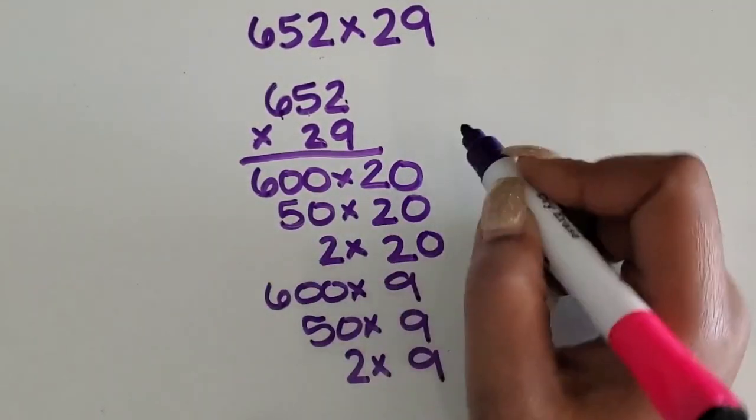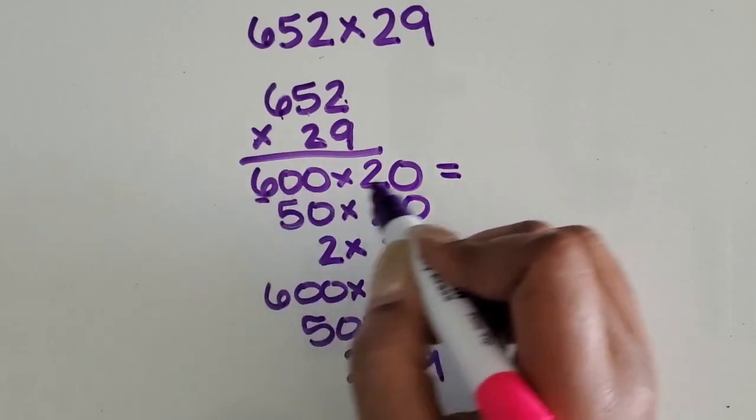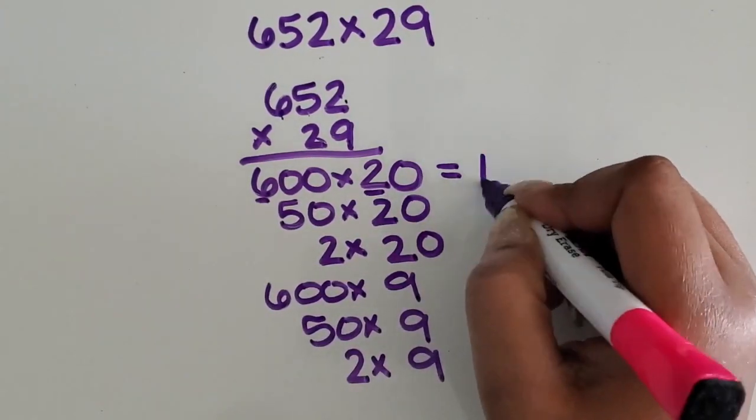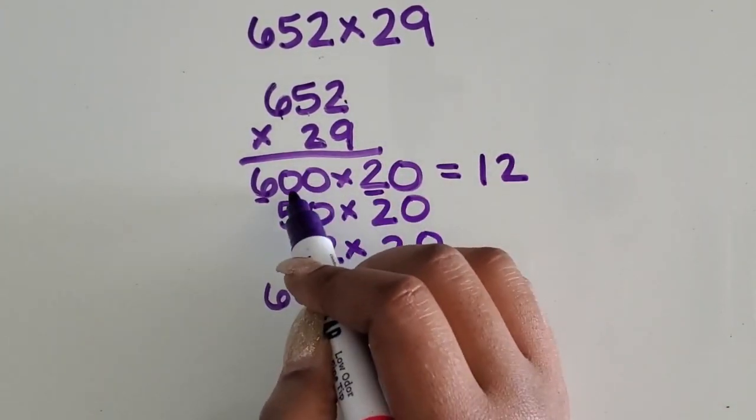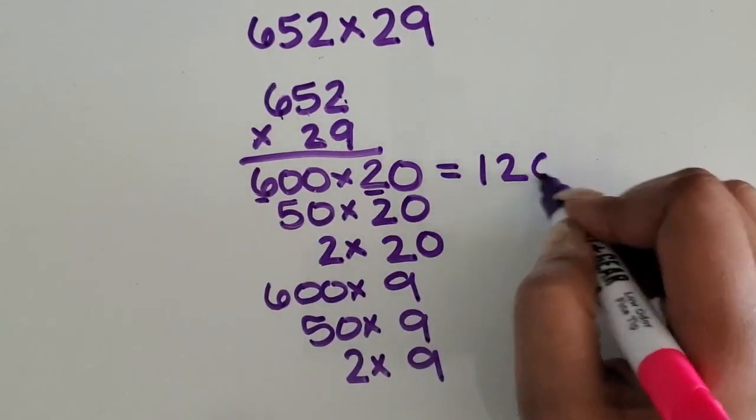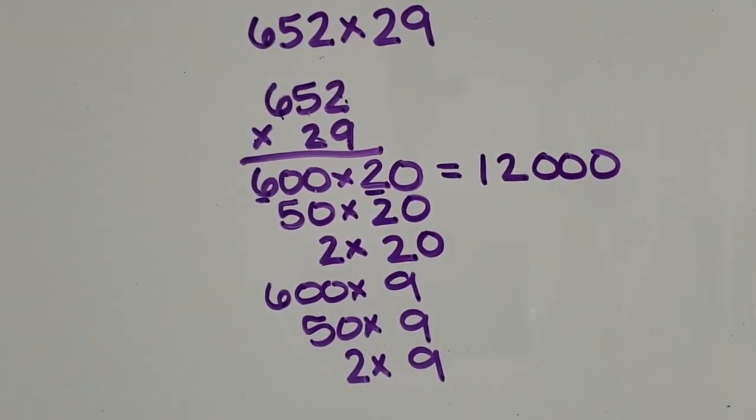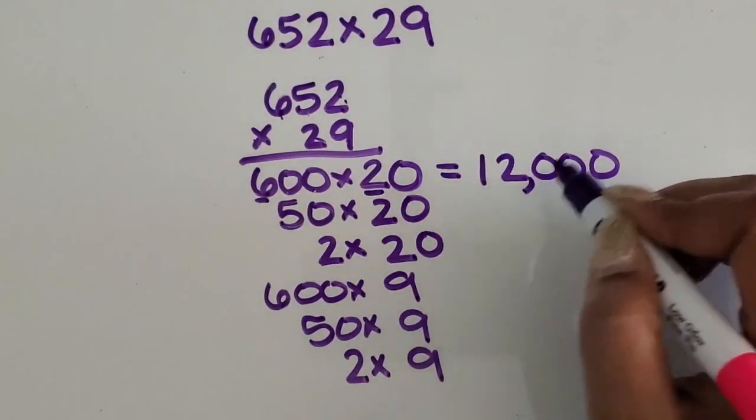So 600 times 20. 6 times 2 is 12. We have 1, 2, 3, 0s. So we know it's going to be 1,000 times greater than 12. 12,000.